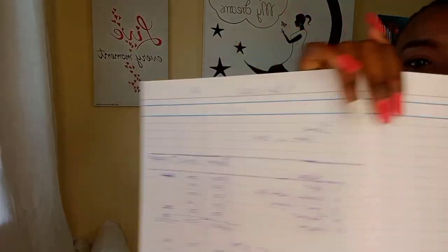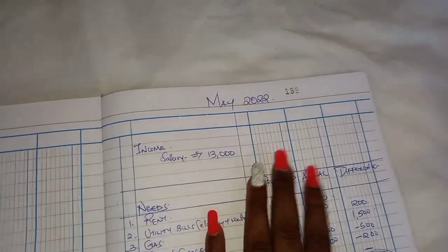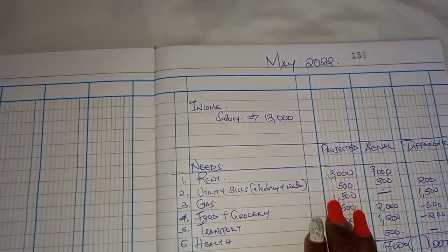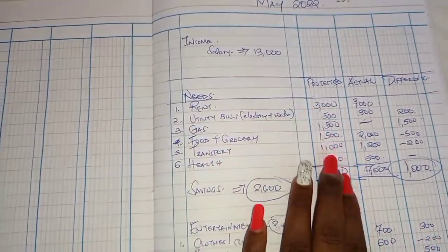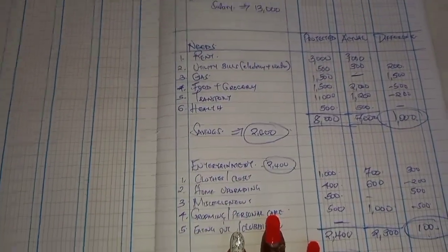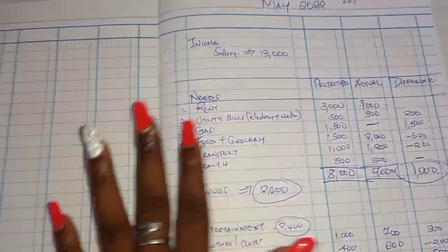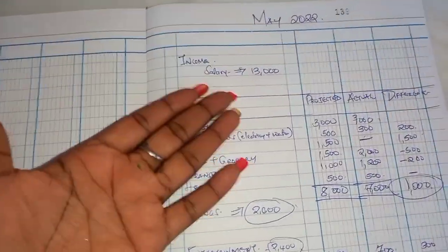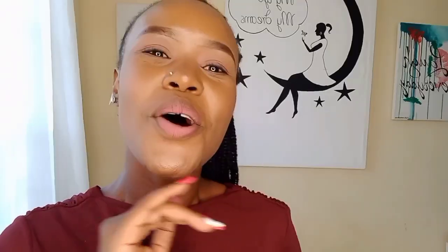Without further ado, let's begin. In the previous episode we created a May budget using a salary of 13,000 Kenyan shillings, which is the minimum wage in Kenya. These are the categories we put down, and we did a projected budget where we allocated funds to the various categories. This is you intentionally allocating a particular amount of money to each category. The actual spending could vary — you could underspend or overspend depending on how the month goes.